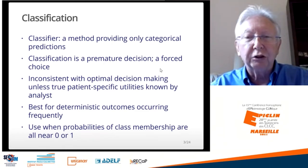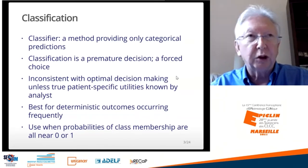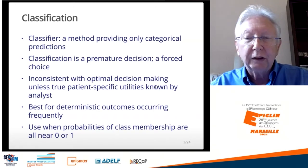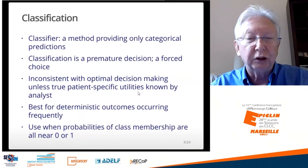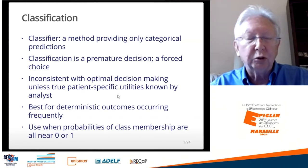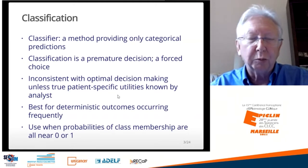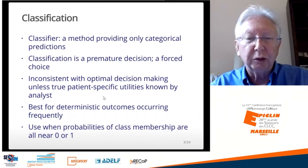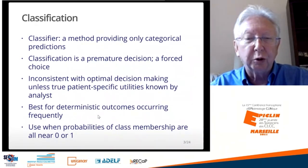This is a forced choice without knowing the consequences that you capture in a utility function. Because of the way classification is set up, classification is really very inconsistent with optimal decision making, unless you really know the true patient-specific utilities and incorporate those in the analysis. So why is this such a problem? Machine learning really started off on the wrong foot — classifiers were easier to develop than probability models, and so they started to be used even for applications where classification is not the appropriate task.